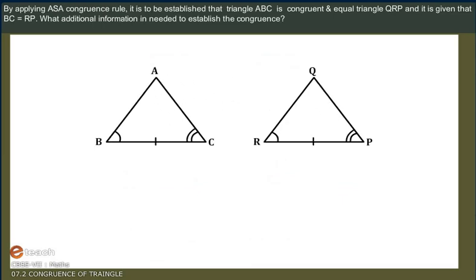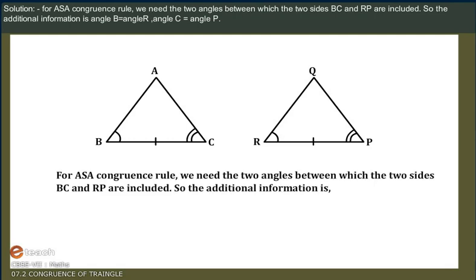By applying the Angle-Side-Angle Congruence Rule, it is to be established that Triangle ABC is congruent to Triangle QRP, and it is given that BC is equal to RP. What additional information is needed to establish the congruence? Solution: For the Angle-Side-Angle Congruence Rule, we need the two angles between which the sides BC and RP are included. So the additional information needed is Angle B is equal to Angle R and Angle C is equal to Angle P.